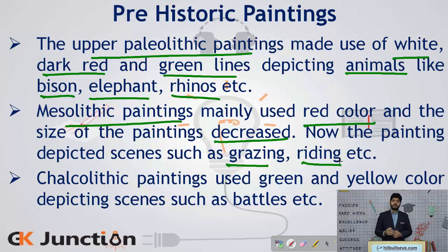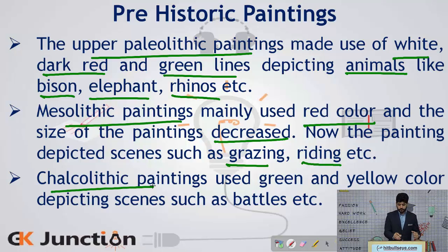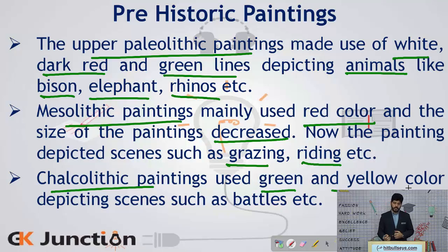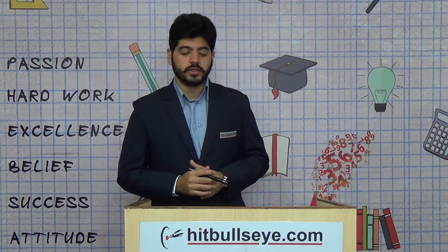The last period of prehistoric paintings was the Chalcolithic period. In Chalcolithic times they made use of colours such as green and yellow, and with these colours they depicted scenes such as battle scenes.